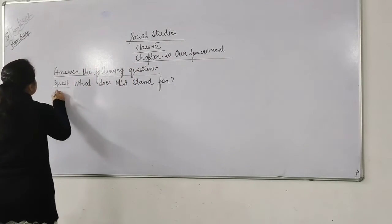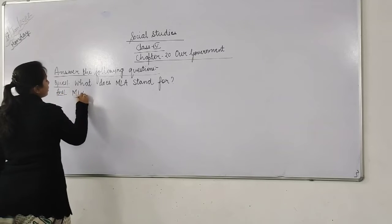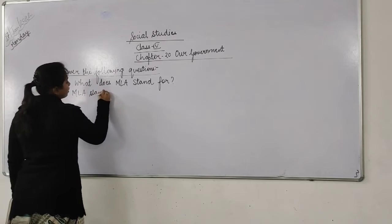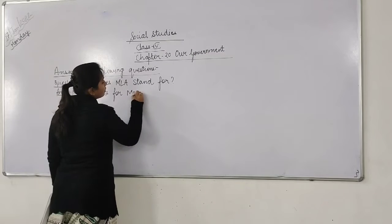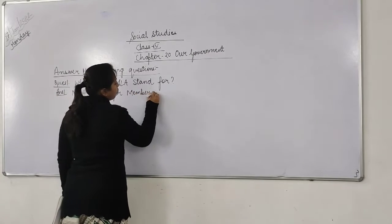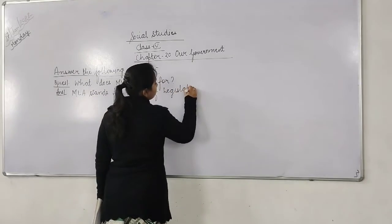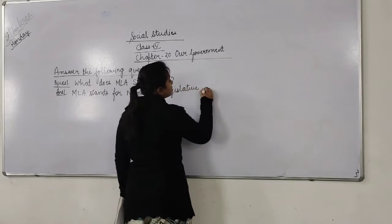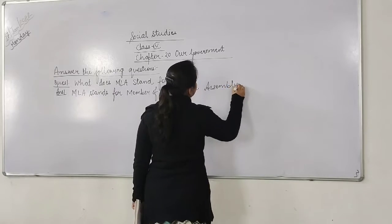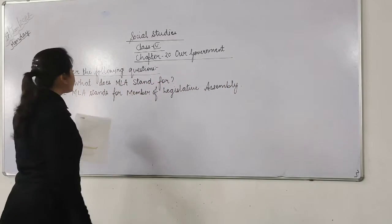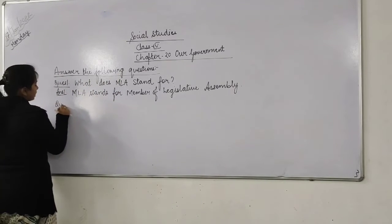The full form of MLA is Member of Legislative Assembly. MLA stands for Member of Legislative Assembly — every state's elected representative is called a Member of the State Legislative Assembly.